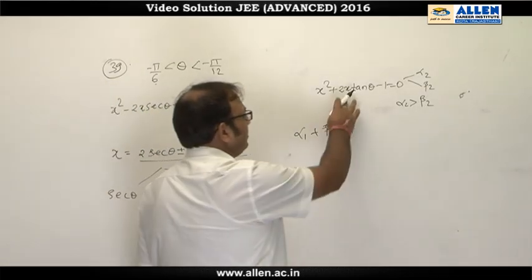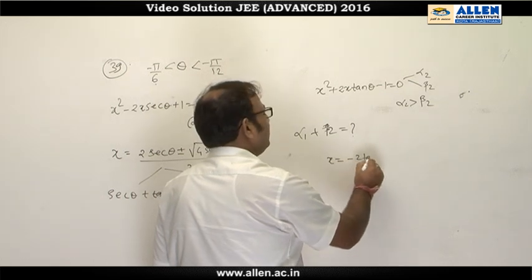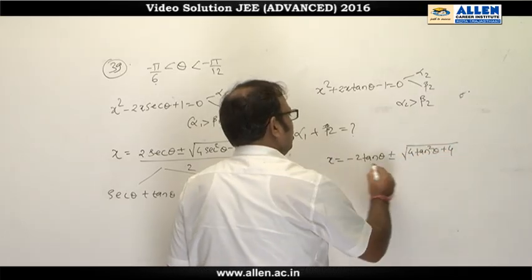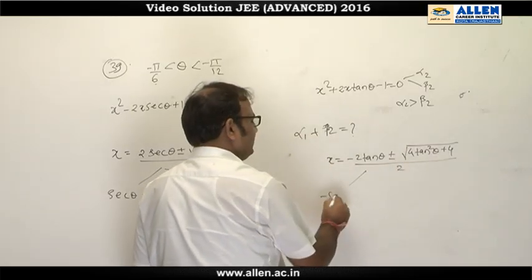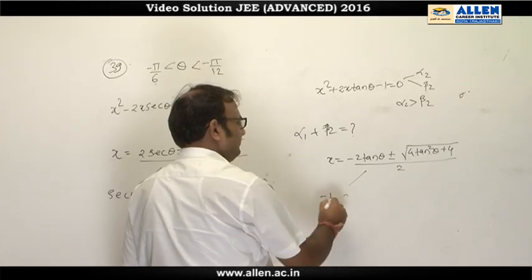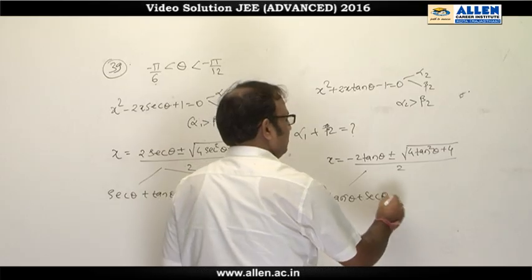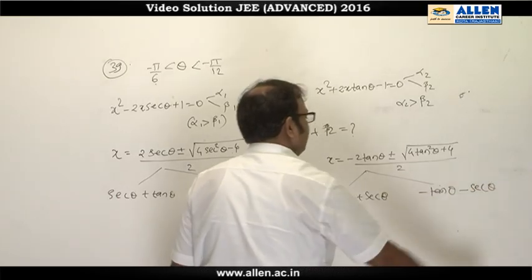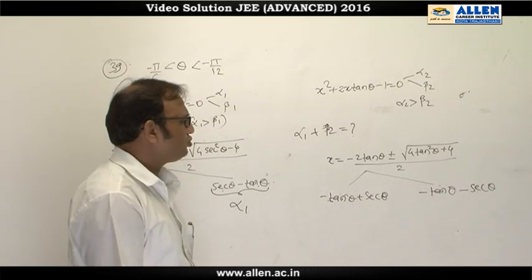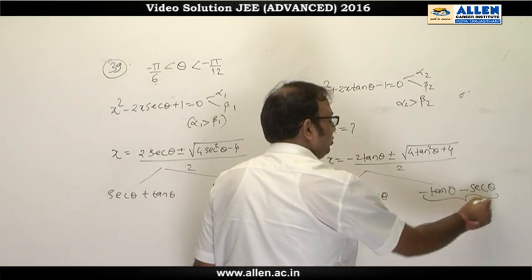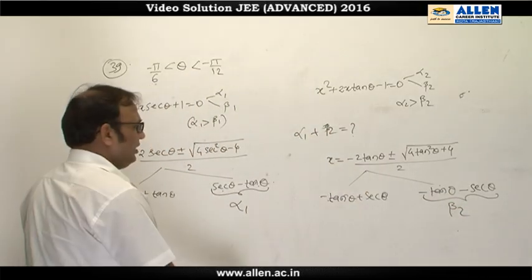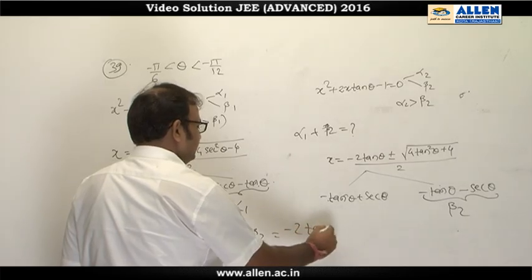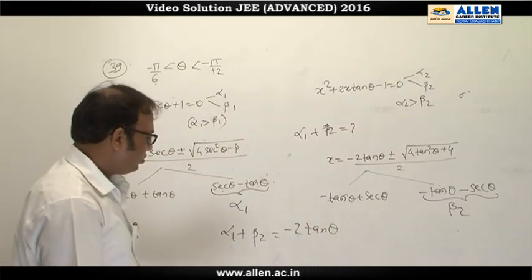Similarly, solving the second equation x² + 2x·tan θ − 1 = 0 we get x = −tan θ ± sec θ, giving roots sec θ − tan θ and −sec θ − tan θ. We need β₂, the smaller root, which is −tan θ − sec θ. Adding α₁ + β₂: sec θ − tan θ + (−tan θ − sec θ) = −2 tan θ. Checking the options, option C is correct.